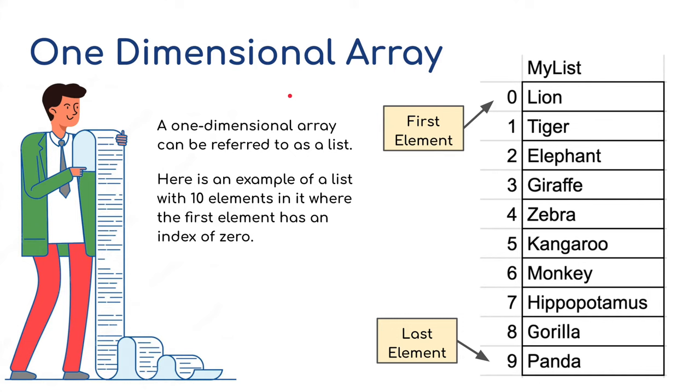We'll start with one dimensional arrays and also refer to it as a list, a list of items. Here is an example of a list with 10 elements in it where the first element has an index of 0. Lion is at position 0, that's the first element in the list. We've got 10 items in the list and the last element being number 9, panda. This is the 10th item because the first item is at position 0.